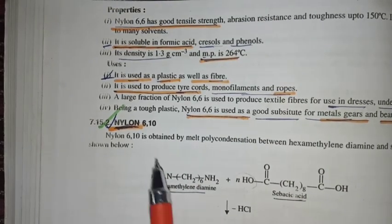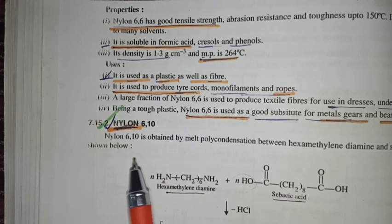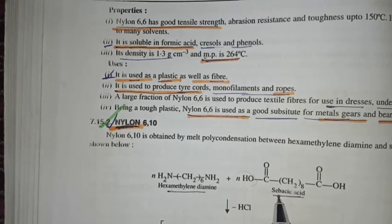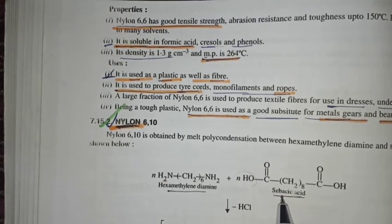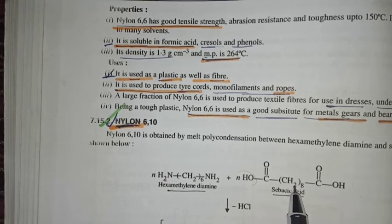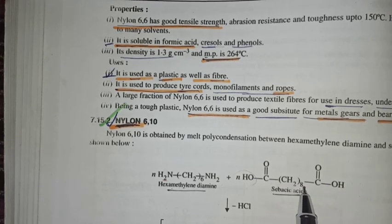Then next we have nylon 6,10. So here we have hexamethylene diamine, which we have in nylon 6,6 is the same, monomer 1. And one change here is adipic acid, and here we have sebacic acid. So here we have mostly changes, there was CH2-4 and here CH2-8.